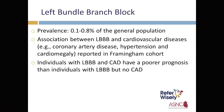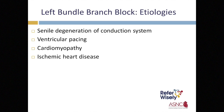Left bundle branch block is present in 0.1 to 0.8 percent of the general population and can be associated with a variety of cardiovascular diseases, including coronary artery disease, hypertension, and cardiomegaly. It is important to determine if there is an ischemic etiology for a new left bundle branch block, because individuals with left bundle branch block and coronary artery disease have a poorer prognosis than those without. Left bundle branch block can also occur due to senile degeneration of the conduction system, ventricular pacing, or cardiomyopathy.